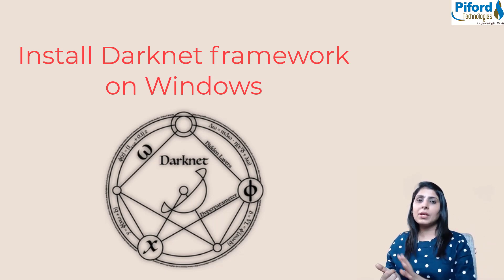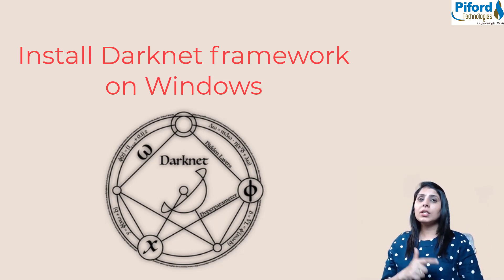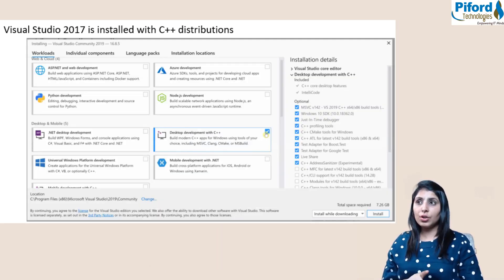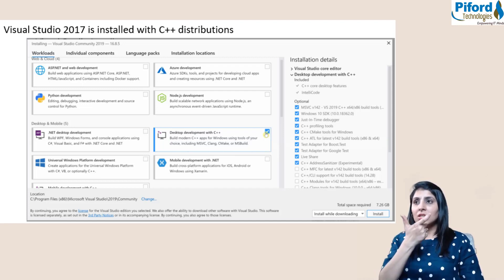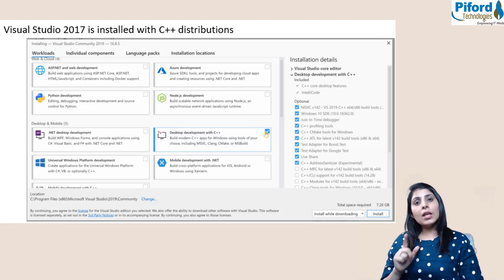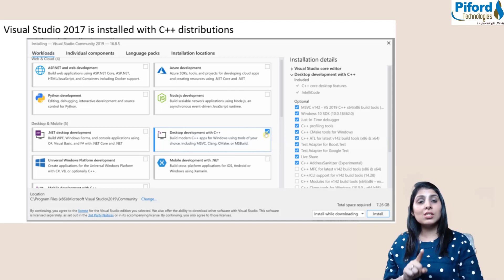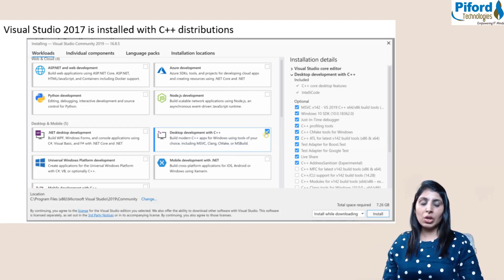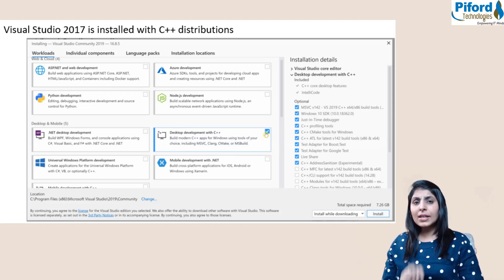Before installing darknet, there are two prerequisites. First, Visual Studio 2017 should be installed on your PC with C++ distribution. This means you need to select 'Desktop development with C++' during the Visual Studio installation — you can see the blue tick mark in the picture. This is important; you must select it and then install Visual Studio 2017.